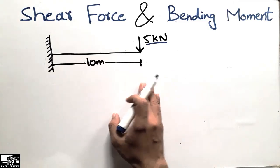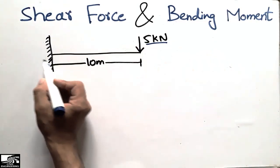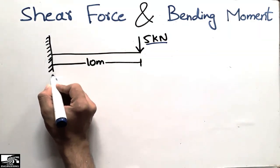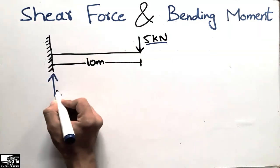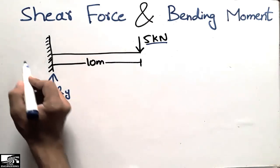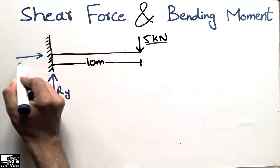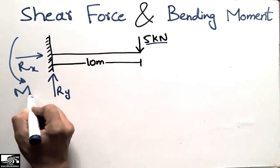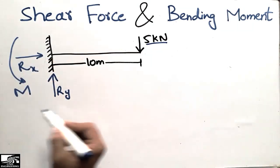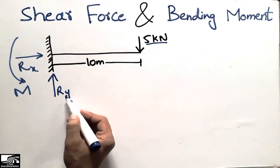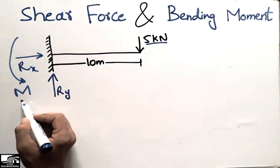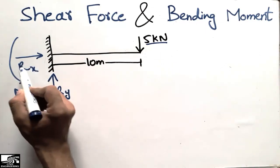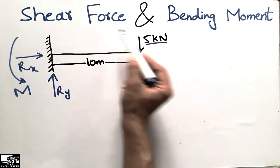As we know, a fixed support can resist three types of reactions: a vertical reaction represented by Ry, a horizontal reaction, and a moment. Because it is a fixed support, it resists vertical, horizontal, and moment forces. Since there is no horizontal force acting on this beam, Rx is equal to zero.